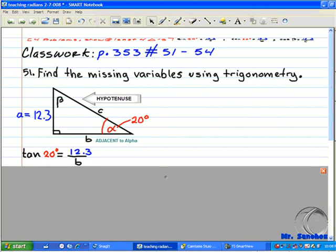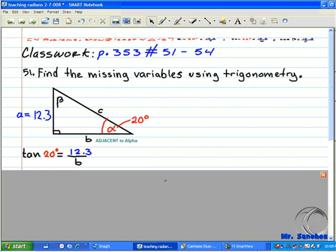Going alphabetically, first we're going to find the value of B, the length of B using tangent. Setting up our equation, we have tangent of 20 degrees equals 12.3 over B.